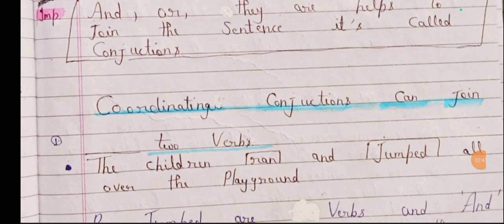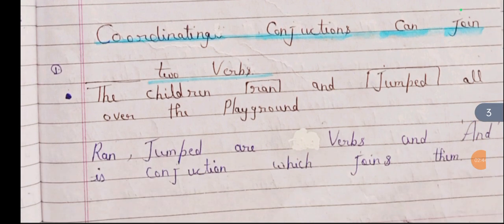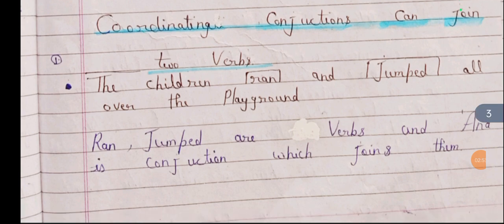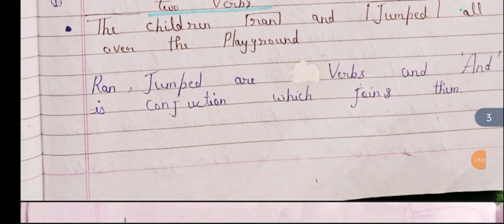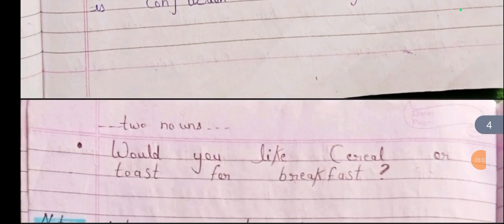Coordinating conjunctions can also join two verbs. For example: 'The children ran and jumped all over the playground.' Here, 'ran' and 'jumped' are both verbs, and the conjunction 'and' joins them.